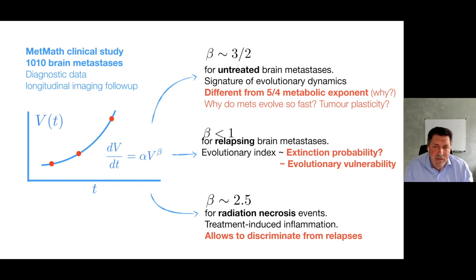This is very interesting because it's a signature of strong evolutionary dynamics down there at the cellular level. Interestingly, this is different from the five-quarter exponent that we get in metabolic studies. We don't know why. This is a good point for theoretical physicists, I guess. So it's interesting why mets are able to evolve so fast. We think that could be related to tumor plasticity. By the way, the previous talk was very interesting pointing out the role of tumor plasticity because genetics is not able probably to provide such huge acceleration in the time scale of a few months. So there should be something else.